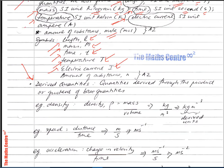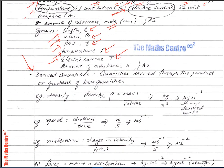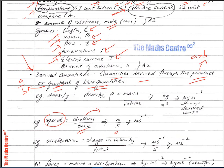Let's move to derived quantities. Derived quantities are quantities derived through the product or quotient of base quantities — product meaning A times B, quotient meaning A over B. For example, speed is distance over time — a quotient. Distance is measured in meters, time in seconds, so the units for speed are meters per second.